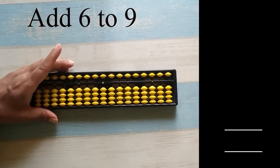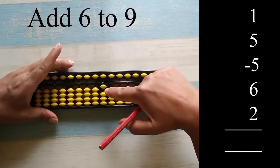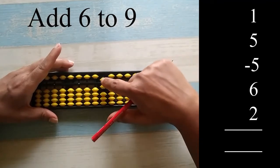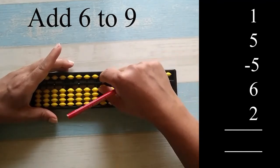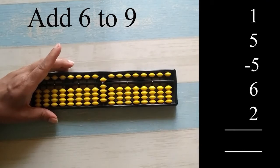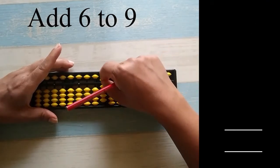Let's see some sums. 1, 5 less 5, 6, 2. That is 9. One more sum.